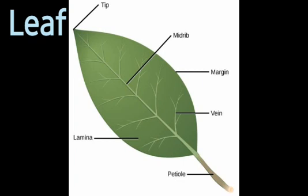There are different kinds of leaves and they have different size, shape, and color. As you have seen in the picture, the part of a leaf by which it is attached to the stem is called the petiole. The broad green part of the leaf is called the lamina.